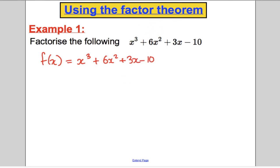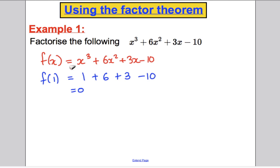I'm going to use the factor theorem to find a factor by trying various values. Let's try f of 1: we get 1 cubed which is 1, plus 6 times 1 squared which is 6, plus 3 times 1 which is 3, minus 10. Luckily on my first choice this actually equals 0. So f of 1 is 0, which means x minus 1 is a factor of this polynomial. I can now start factorizing: x cubed plus 6x squared plus 3x minus 10 equals x minus 1 times some bracket.